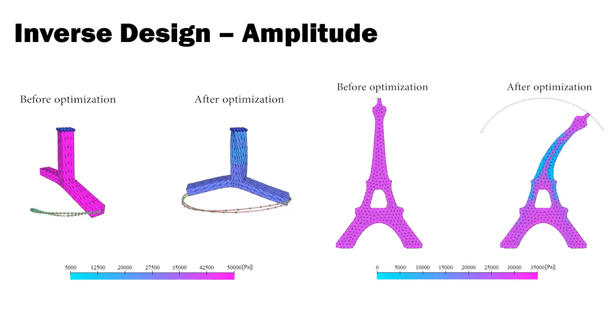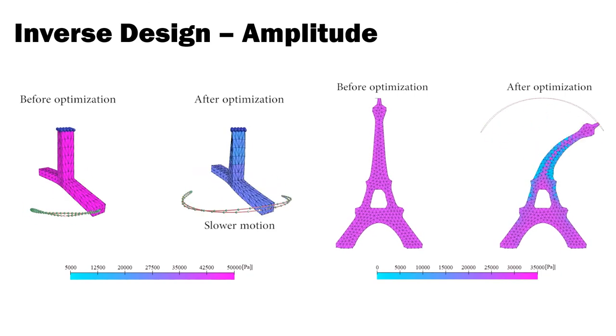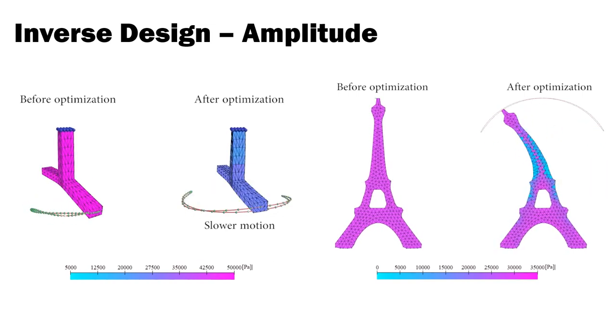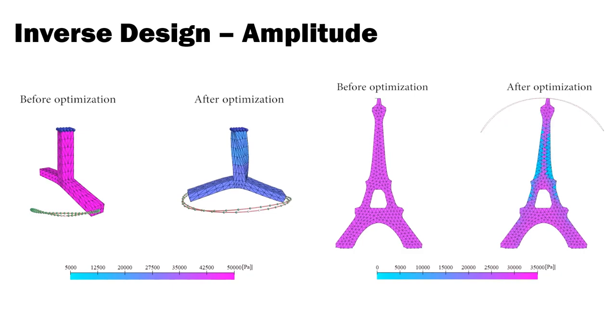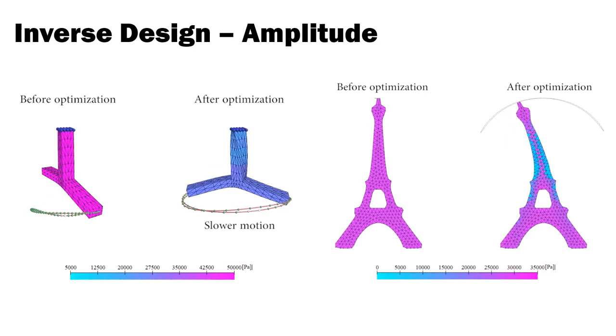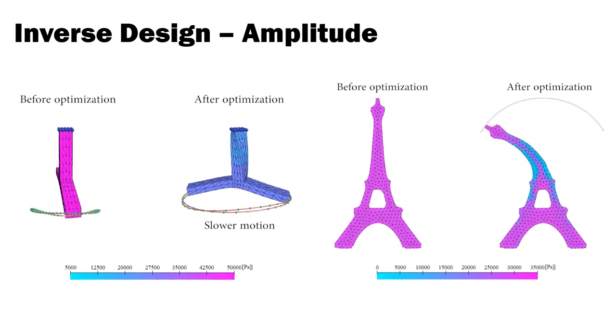We finally investigated applications of our approach to material optimization for viscoelastic solids undergoing nonlinear vibrations. In these examples, we optimize per-element Young's modulus such as to maximize the amplitude of selected nodes. As can be seen, the optimization discovers material assignments that significantly amplify the motion in both cases.